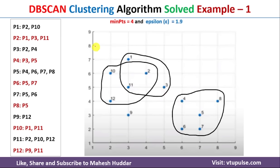Finally, we get three clusters from applying the DBSCAN clustering algorithm to these 12 data points. This is how we can identify core data points, border data points, and noise data points, and then form the clusters. Note that P9 is not part of any cluster, meaning P9 is the noise point — or outlier — among these 12 data points.